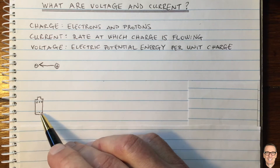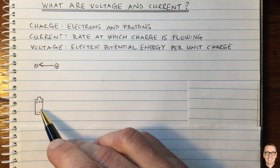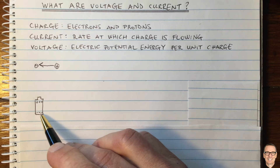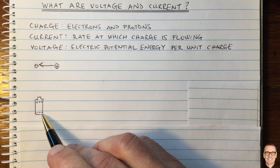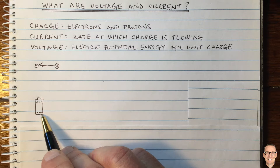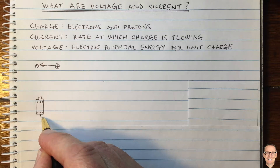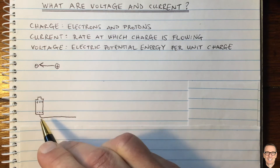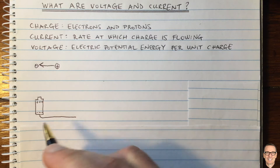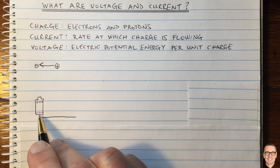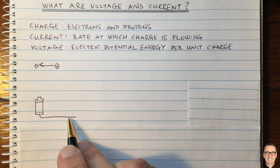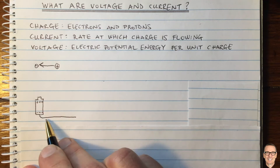Let's think about a battery. Inside a battery, there's a chemical process which is causing electrons to move towards one of its ends, so we say that at this end there is an excess of electrons. What happens if I connect a wire to this end of the battery? The excess of electrons have somewhere they could potentially go — they could move into this wire.